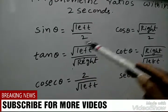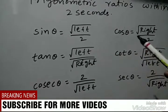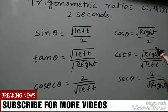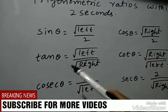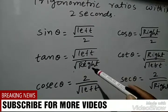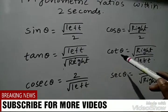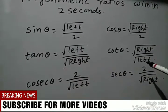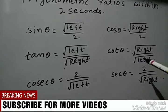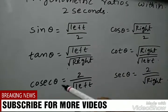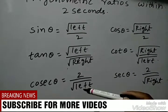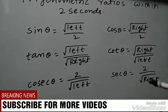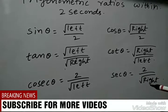So again explaining: sin theta is equal to root left by 2, cos theta is equal to root right by 2, tan theta is equal to square root of left by right, cot theta is equal to root right by left, cosec theta is equal to 2 by root left, sec theta is equal to 2 by root right.